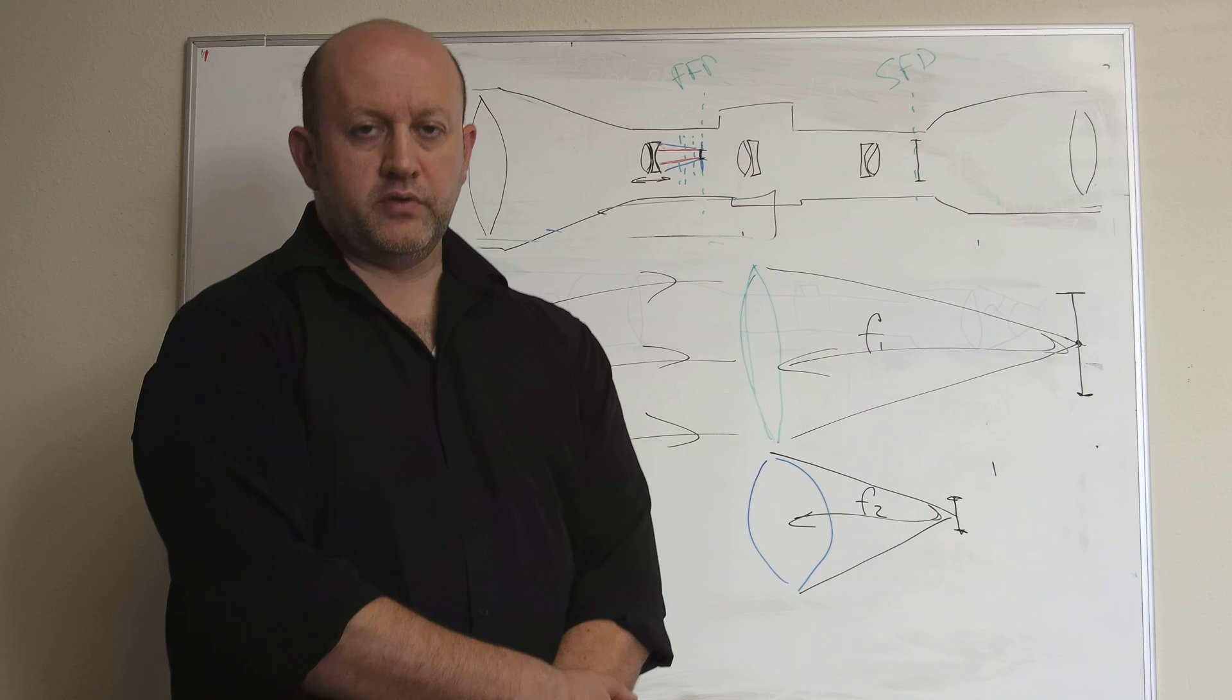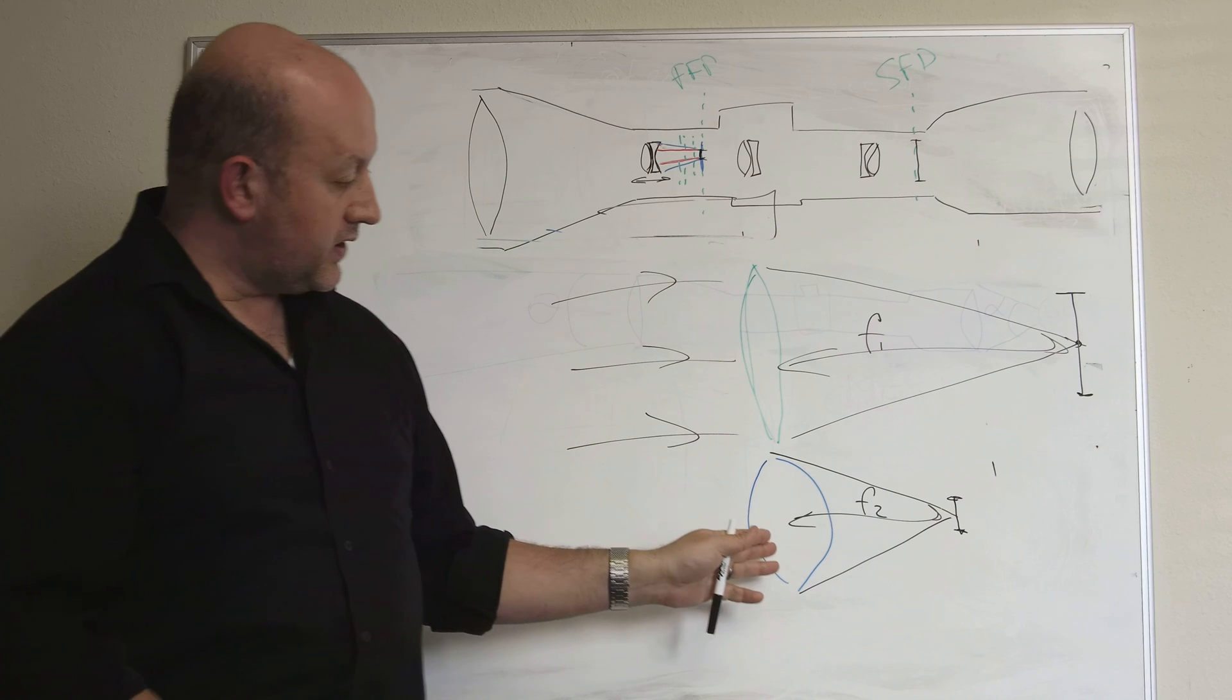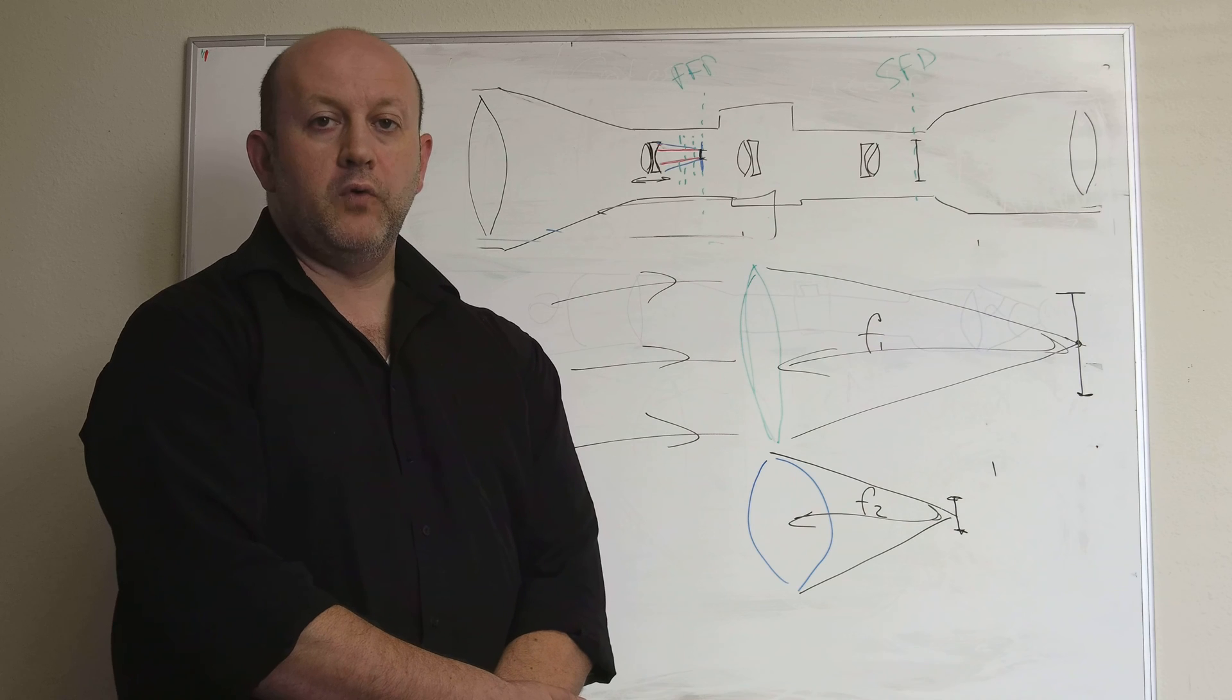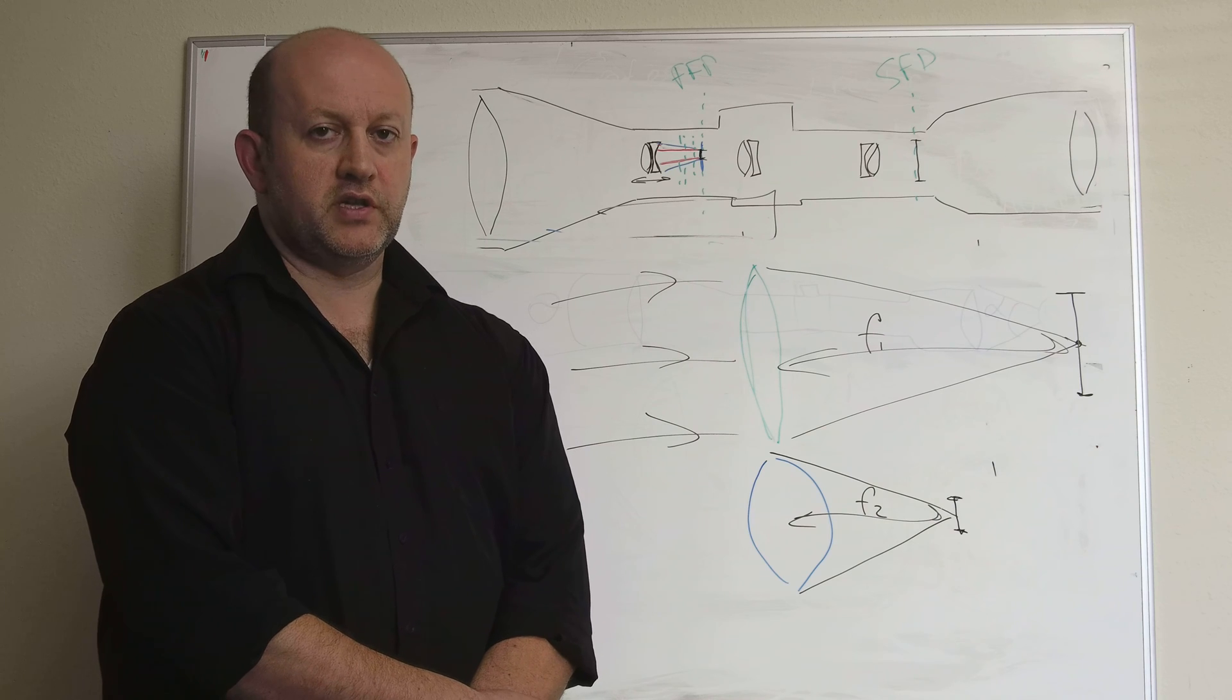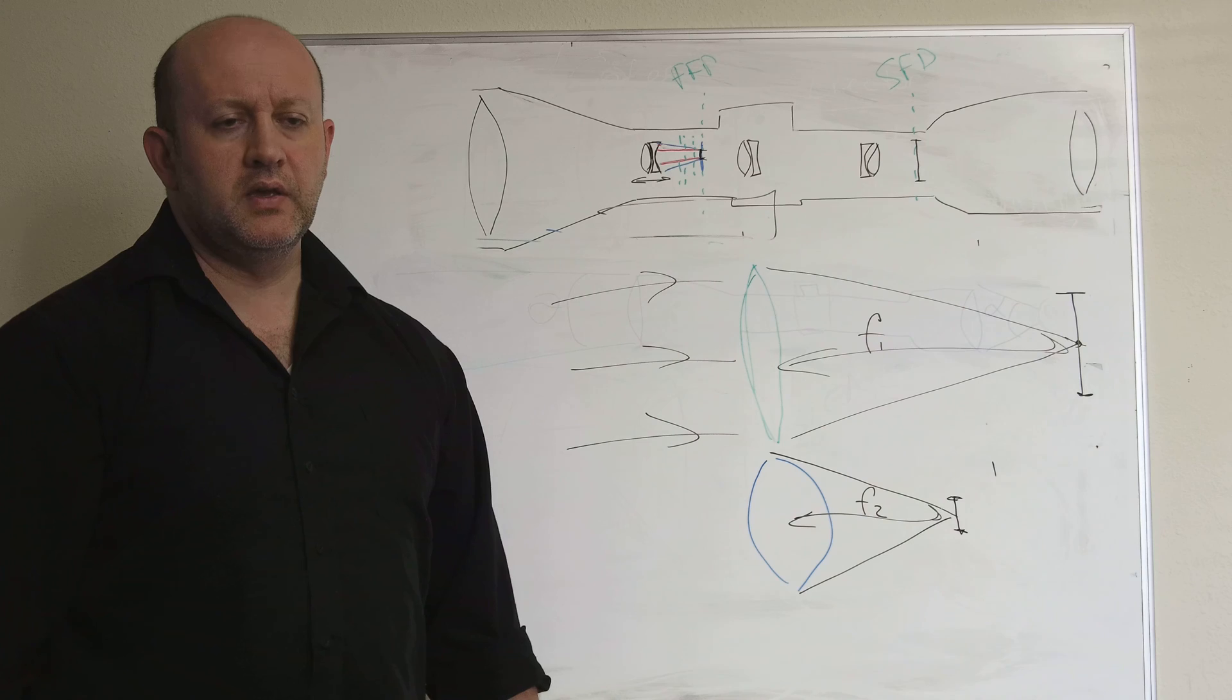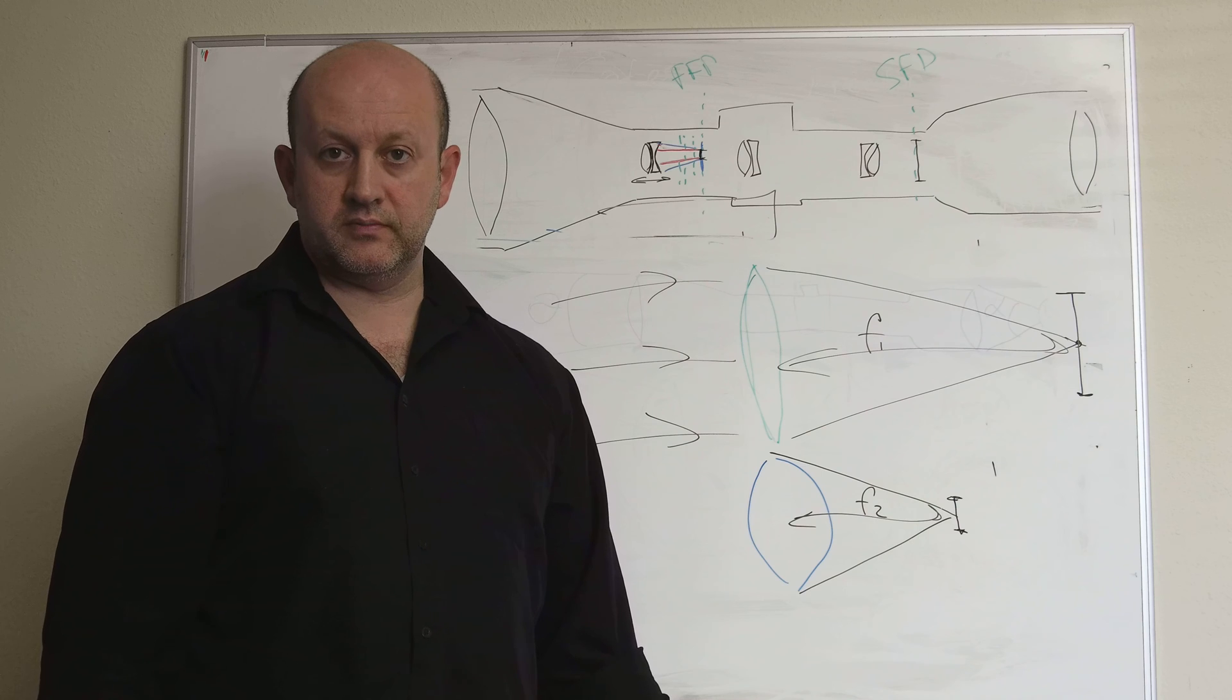A corollary point of that is that if you're putting a reticle in the front focal plane and you're working with very aggressive lenses so that the physical size of the image in the front focal plane is very small, for the reticle to look appropriately thin for precision shooting, the features in the reticle cell also have to be very small. So it's additional complication for the lithography process.